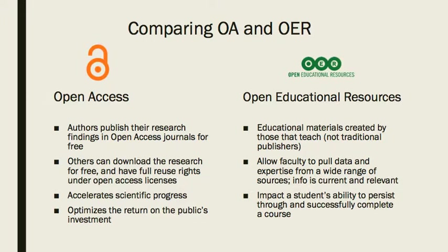While sharing similar qualities, the motivations for creating OER are different than creating OA. In academic publishing, faculty need to get published and have their work cited in order to receive recognition and advancements in their careers. The open access publishing model is where that can happen in a much more equitable way than in the traditional publishing model. The motivation of OER is to create educational materials that are relevant to the student community in a particular course. The instructor knows what they want to teach, and OER gives them the flexibility to pull content from a variety of resources to meet their teaching objectives.